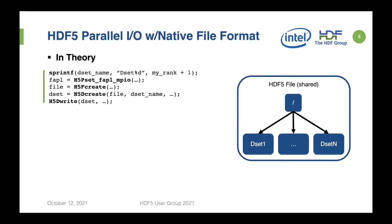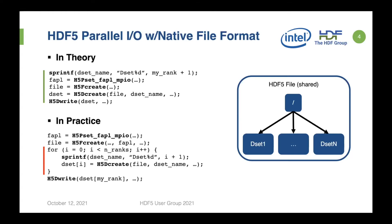To illustrate: say you have an HDF5 file and you want each of your ranks in parallel to create one dataset. In theory, you would call H5F_create and then H5D_create with the dataset name. But that wouldn't work. With the native file format, you would have to have all ranks involved in the creation operation and loop over all the dataset create operations. The more ranks you have, the more costly it will be.